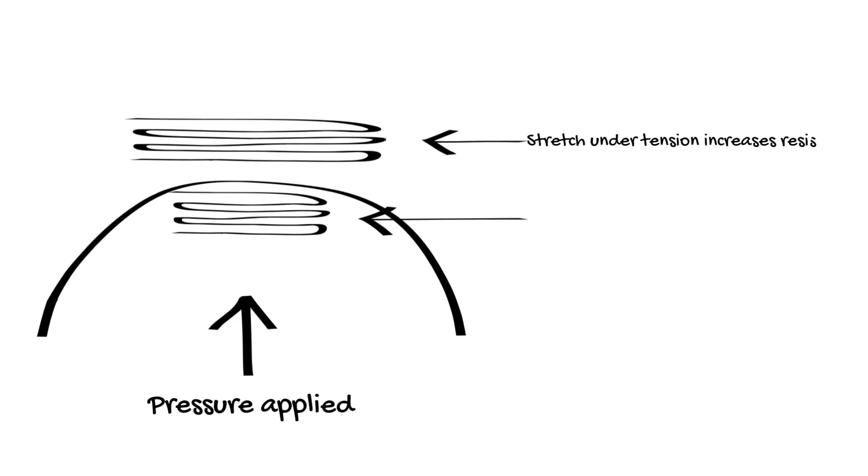As the strain gauge is stretched, the wire is drawn thinner which increases the electrical resistance. We can then measure this change in resistance and use it to calculate the pressure which is being applied to the diaphragm.